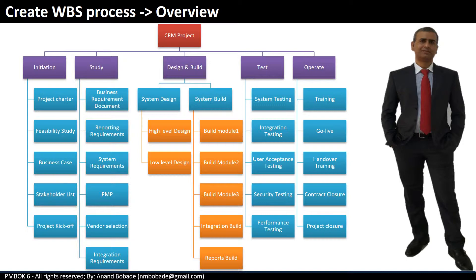The resulting WBS looks like an organization chart, with the top level being large components and the bottom level being the smallest work packages. These small components can be further divided into smaller ones. It's also equally important to understand what WBS is not. Please note it is not a flowchart — there is no sequence of activities or components. It doesn't show how the project will be executed, and it doesn't show relationships between two or more components or packages.